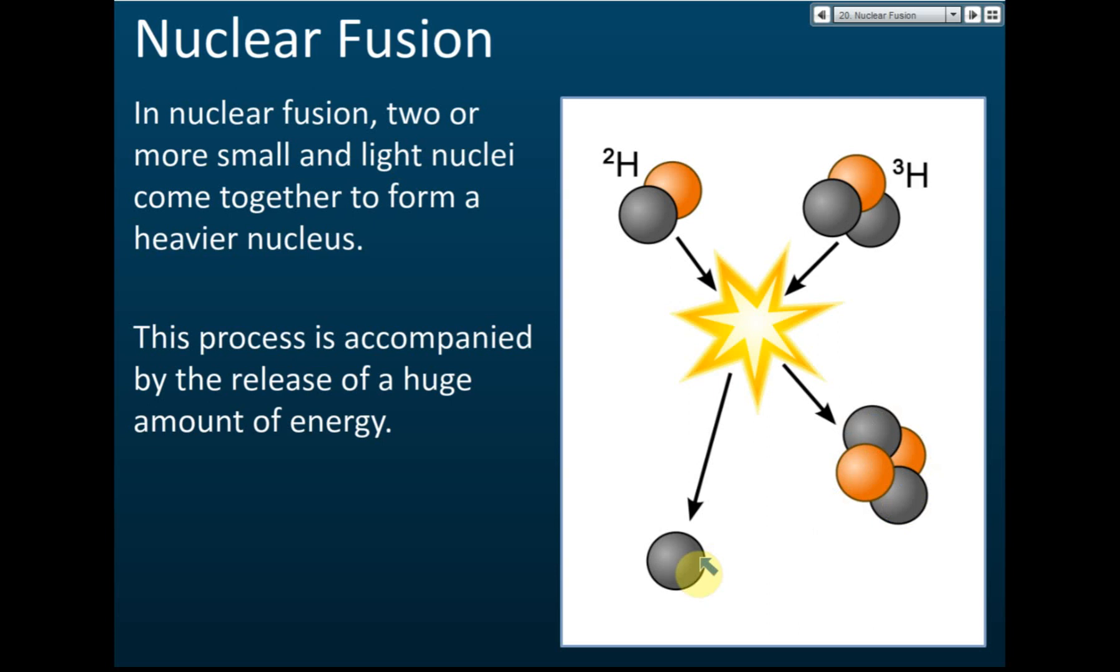Here it produces two new nucleus. This is deuterium, this is tritium - both are isotopes of hydrogen. These hydrogens combined with these hydrogens. After the reaction...